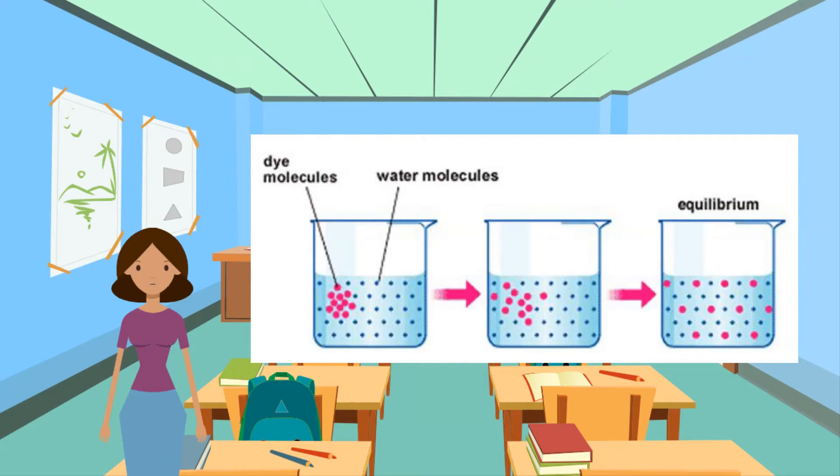Diffusion in gases is quicker than in liquids because the molecules are more free to move around, there are more space between the molecules and are moving much faster.